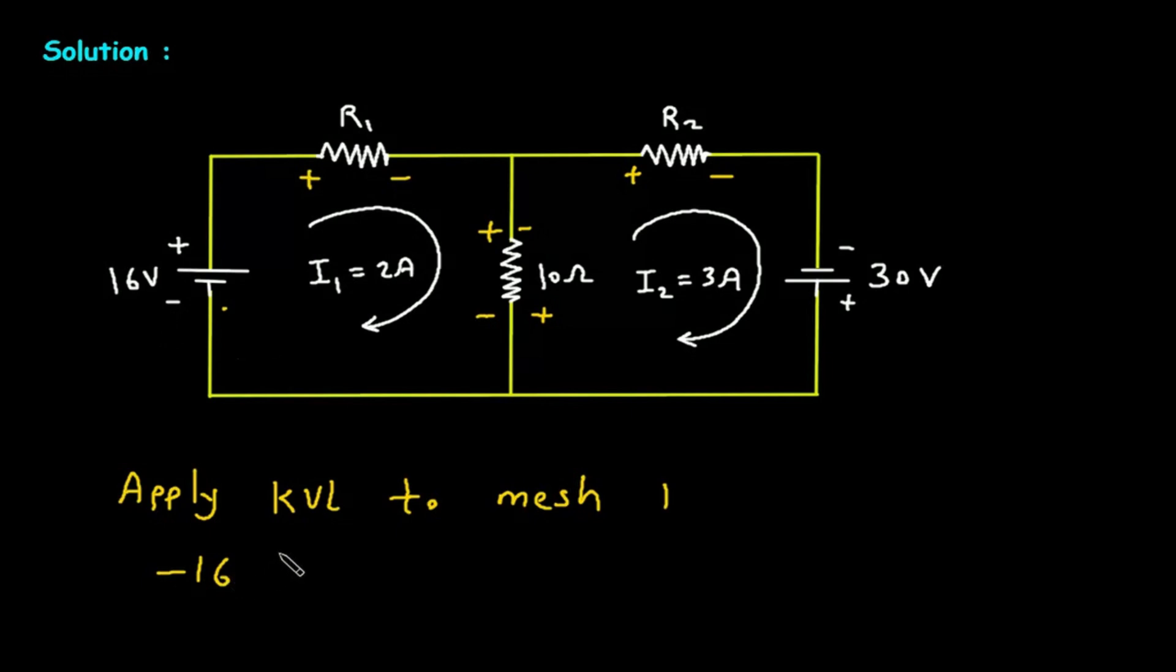then plus R1, plus R1 into I1. I1 is 2 ampere. So R1 into 2. Then plus 10, then I1 minus I2. So I1 minus I2 is 2 minus 3. 2 minus 3 is equal to 0.